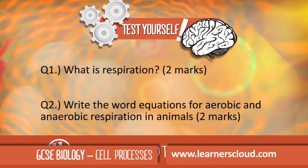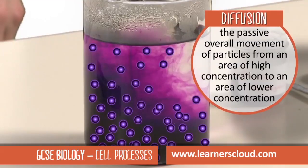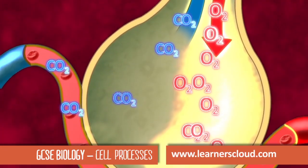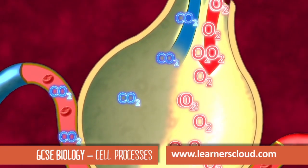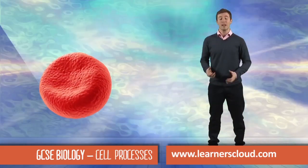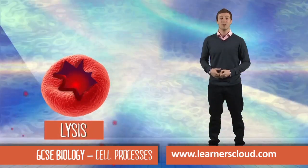Diffusion is a sort of natural tendency for particles to spread out from each other. There is more carbon dioxide in our blood, so it diffuses out. They can burst — this is known as lysis.